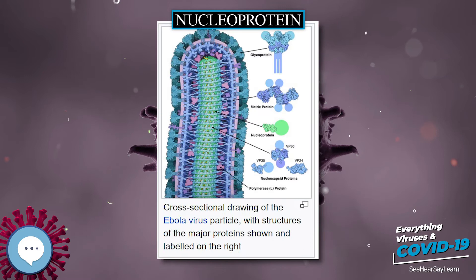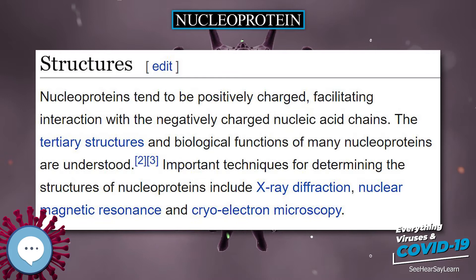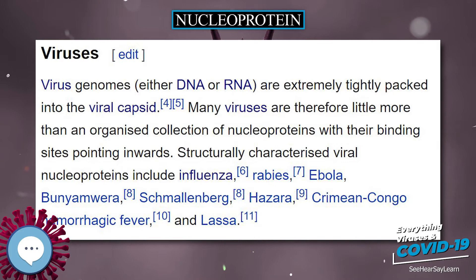Structurally characterized viral nucleoproteins include influenza, rabies, ebola, bunyamwura, schmalenberg, hazara, crimean-congo hemorrhagic fever, and Lhasa.